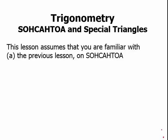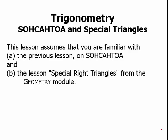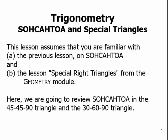Now that we've introduced SOHCAHTOA, we can talk about the very important topic of SOHCAHTOA and special triangles. This lesson will assume that you're familiar with SOHCAHTOA, which we covered in the previous lesson, and it will also assume that you're familiar with the idea of the special right triangles. These special right triangles are the 45-45-90 triangle and the 30-60-90 triangle.